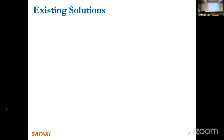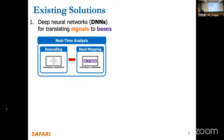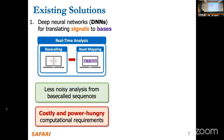Before diving into RawHash, here are two main existing approaches. The first is to use deep neural networks to translate raw signals into bases. This approach provides more accurate analysis because it reduces the noisy signal as we move from raw signals to bases. However, this requires costly and power-hungry computational resources to use these DNN-based methods.